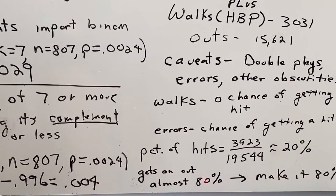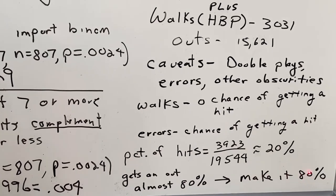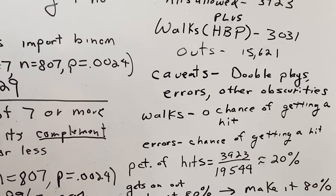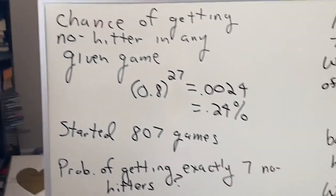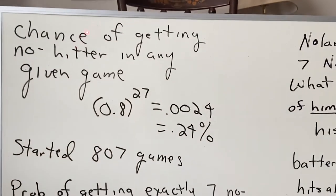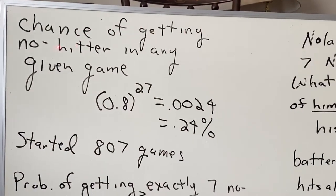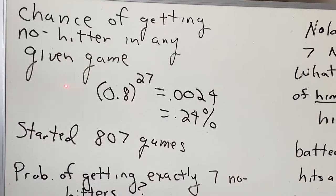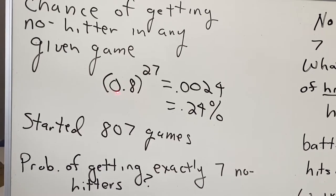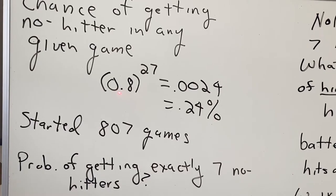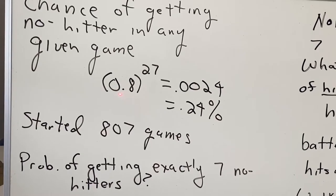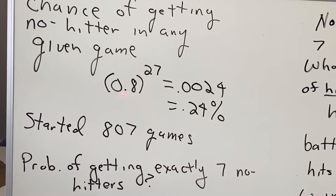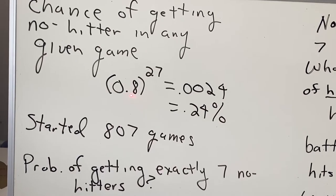Well, that leaves an 80% chance of getting an out. So we ask, what's the chance of him getting a no-hitter in any given game? With the assumption that a batter is going to come to the plate and either get a hit or an out, that's simple. And the chance of getting an out is 80%, which is 0.8.